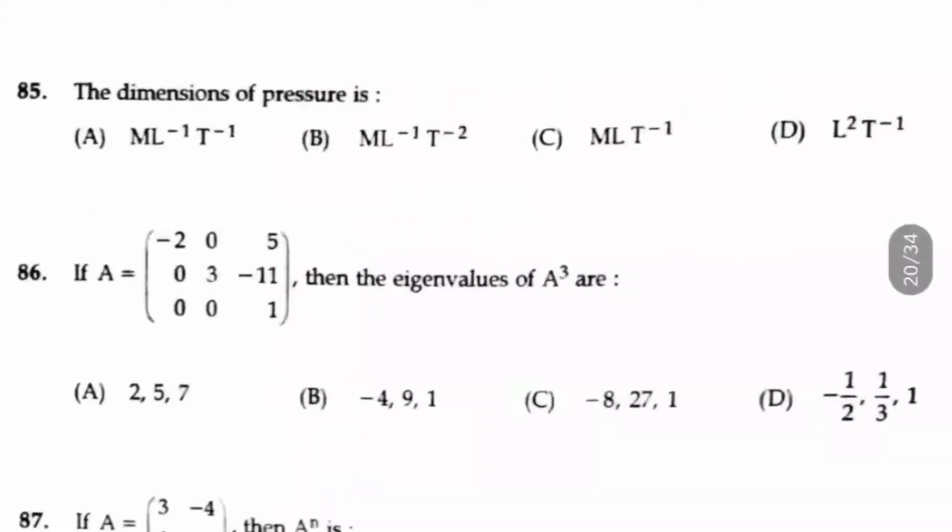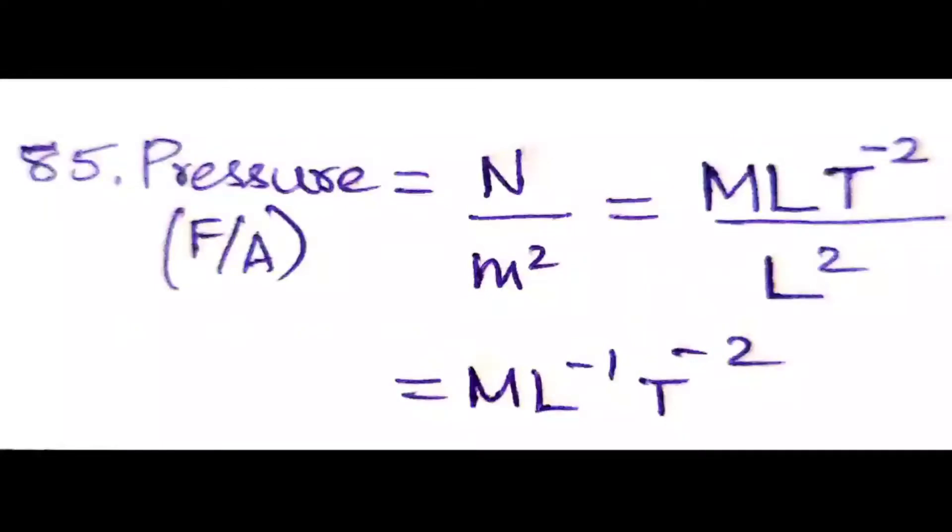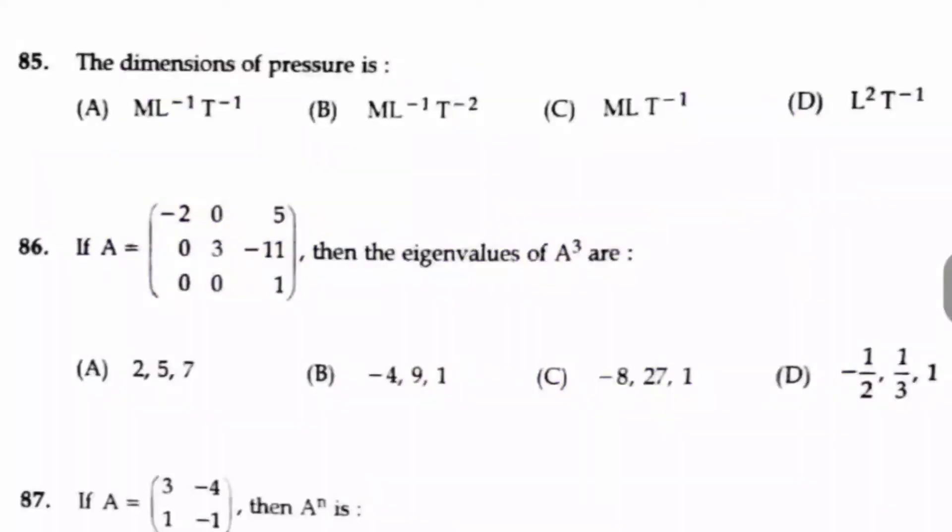Question number 85. The dimensions of pressure is dash. So if you take the pressure, it is force by area. So the unit is Newton per meter square. For Newton, the dimensional unit is MLT minus 2, and for meter square it is L square. So we will get the answer is M L minus 1 T power minus 2. So here the right answer is option B.